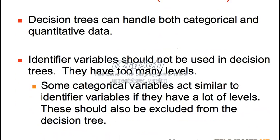We have different types of data. We really want to use either categorical or quantitative. The decision trees we have been using, which are regression decision trees, will actually break a quantitative variable down into categories. For example, height was broken down into above 70 inches and below 70 inches, giving you two categories. You don't want to use an identifier because it will create too many categories — you're just identifying each person instead of creating groups.